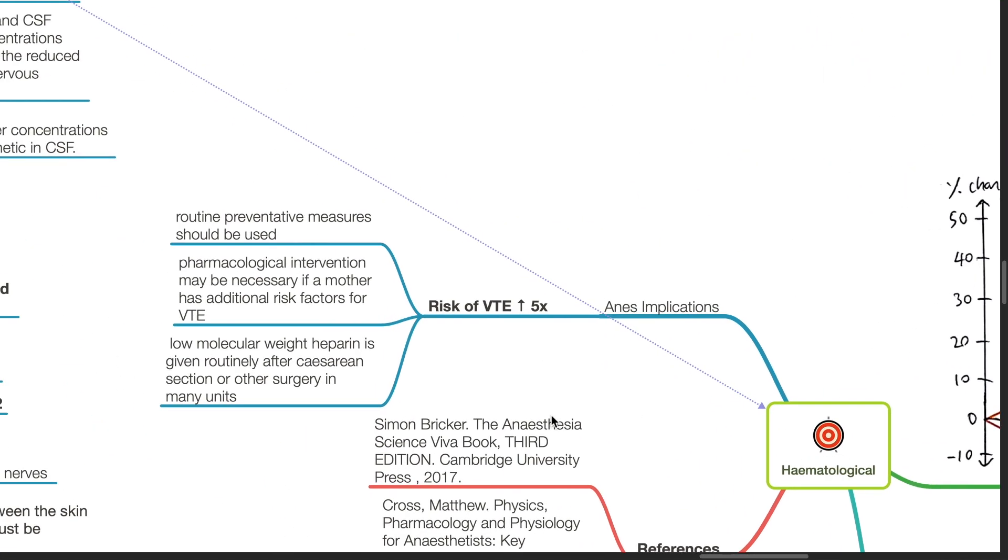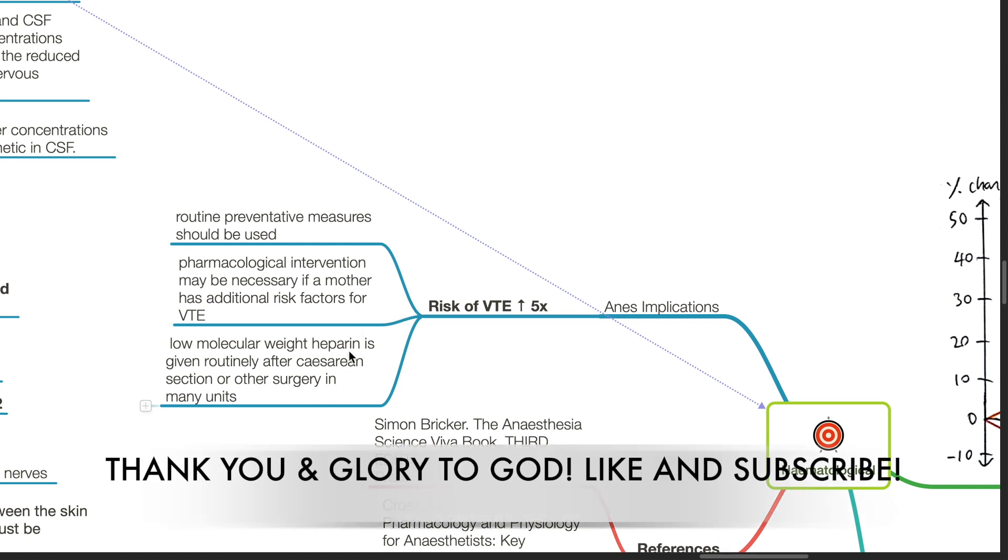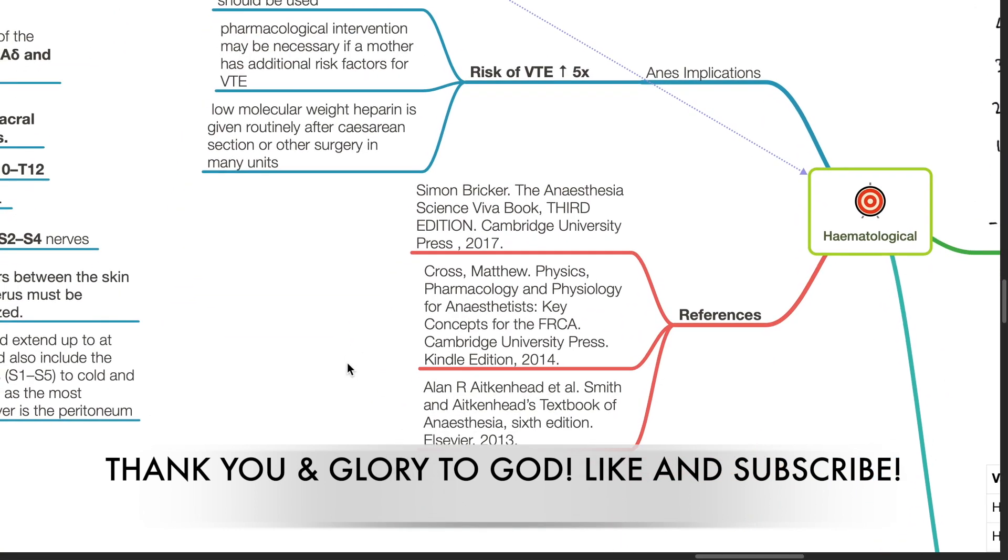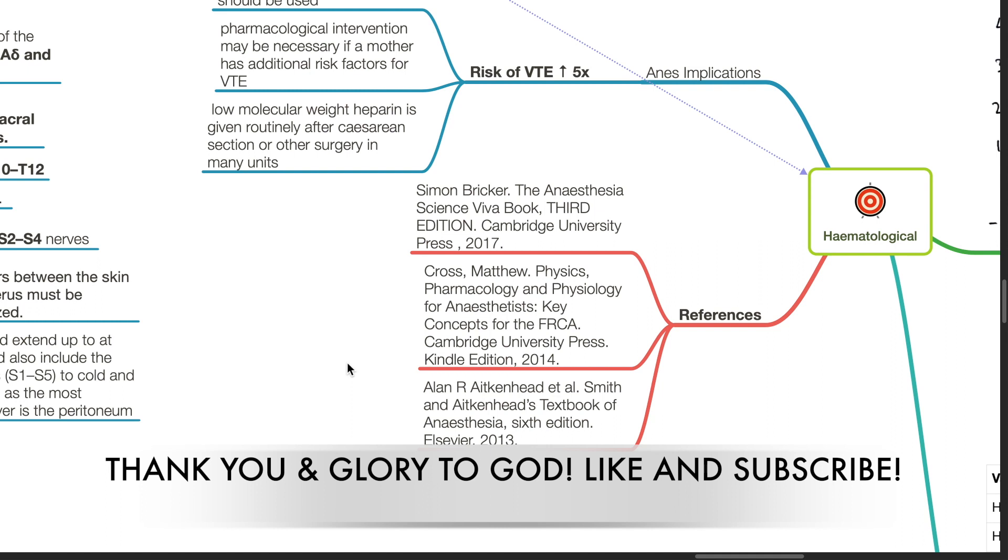Anesthetic implications. The risk of venous thromboembolism is increased by 5 times. Routine preventive measures should be used. Pharmacological intervention may be necessary if a mother has additional risk factors for VTE. Low molecular weight heparin is given routinely after caesarean section or other surgery in many units. These are my references. Thank you.